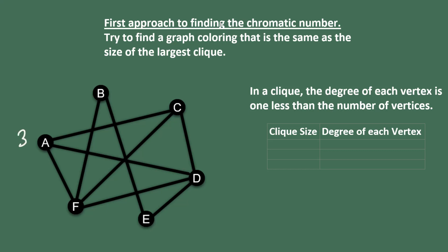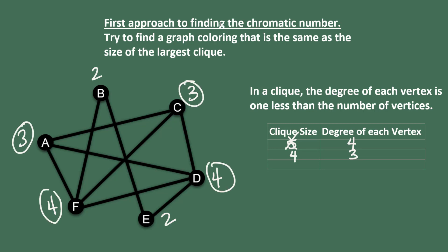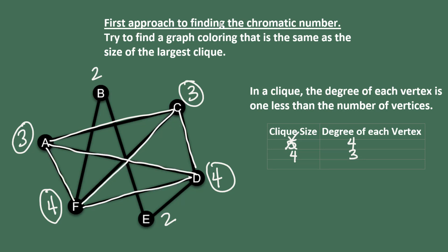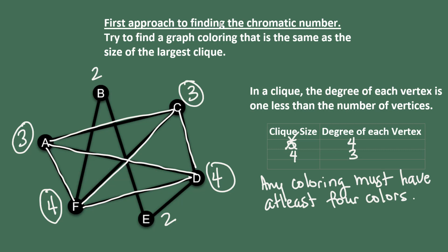Vertex A has degree 3, vertex B has degree 2, vertex C has degree 3, vertex D has degree 4, vertex E has degree 2, and vertex F has degree 4. Seeing two vertices of degree 4, I'm thinking maybe we have a clique of size 5 — but we would need five vertices with at least degree 4, which is not possible here. For a clique of size 4, we need four vertices each with degree at least 3. We have vertices A, C, D, and F. Highlighting the edges between them confirms a complete subgraph: each vertex is connected to each of the other three. Since we have a clique of size 4, any coloring must have at least 4 colors.